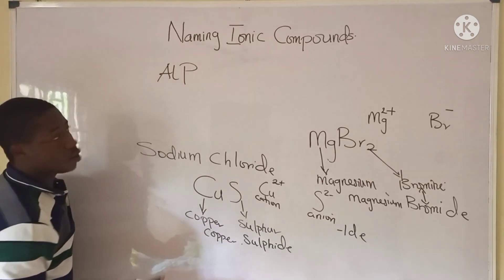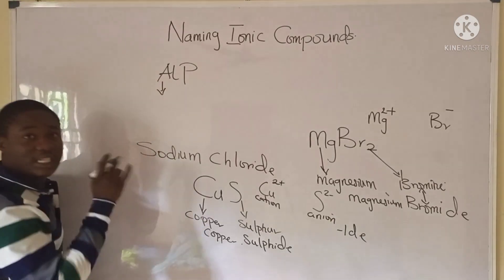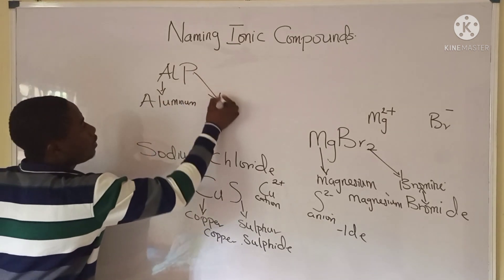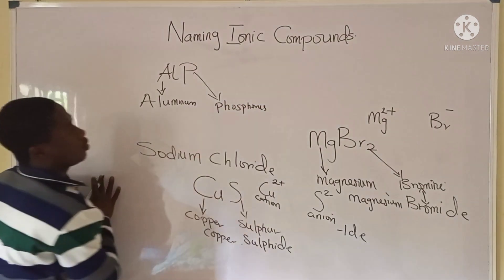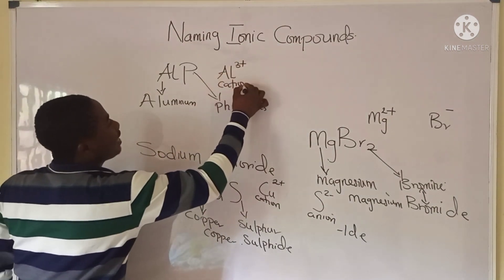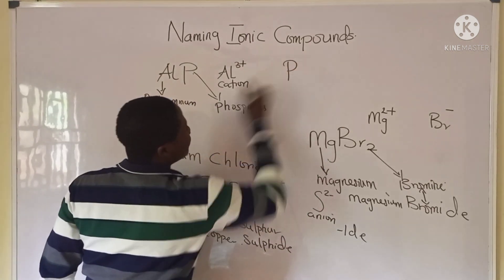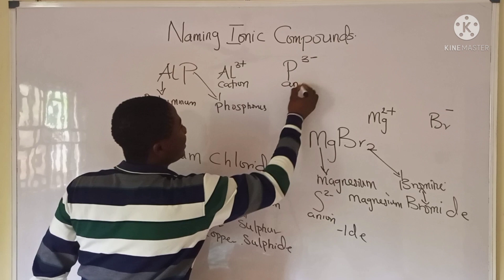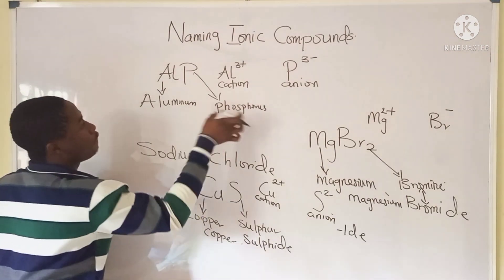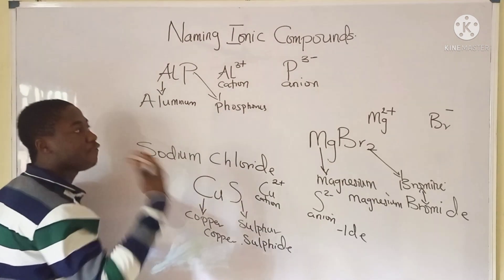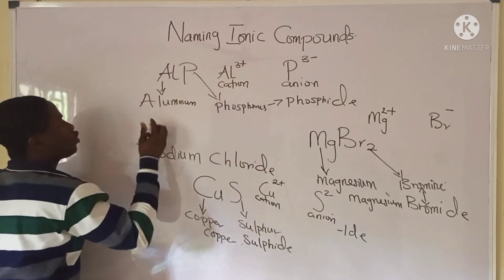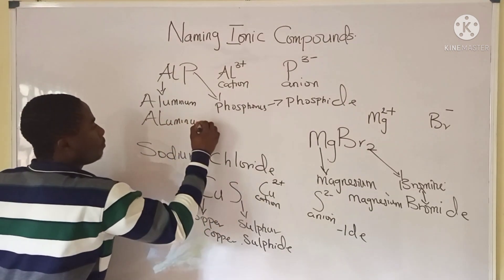Now let's take another example using AlP. What is the name of this compound? This compound is made up of just two elements: aluminum and phosphorus. Aluminum is a metal and it is positively charged, so it is the cation. Phosphorus is a non-metal and it is negatively charged — basically the anion. Remember, for the anion the name is replaced with '-ide,' so phosphorus changes to phosphide, and the name of this compound becomes aluminum phosphide.